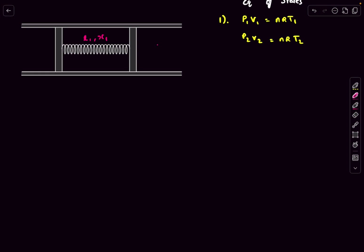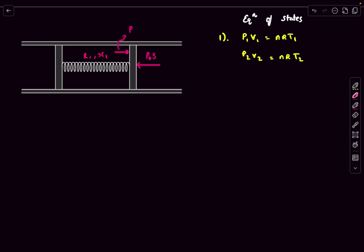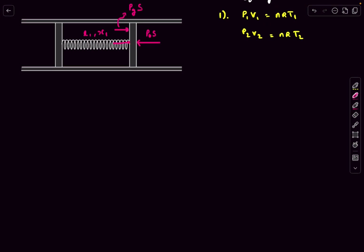For the force balance on the piston, we consider the external force due to surrounding pressure P0, giving a force P0*S on the right side. From the left, the gas exerts pressure Pg times S, and the spring pulls with force k times the extension. Balancing forces: P1 = P0 + k*X1/S, and similarly in the final situation: P2 = P0 + k*X2/S.